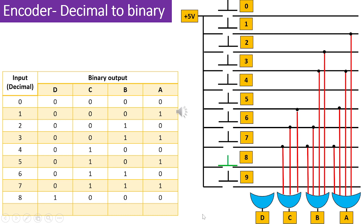Now, consider the scenario where switch 8 is pressed, leading to the activation of the line on the opposite side of the switch and generating a logic 1. However, because the binary representation of decimal 8 is 1000 in a 4-bit format, the OR gates with their outputs labeled as input D are linked to the switch marked as 8. Consequently, when switch number 8 is pressed, the output changes to 1000.